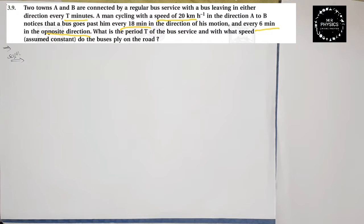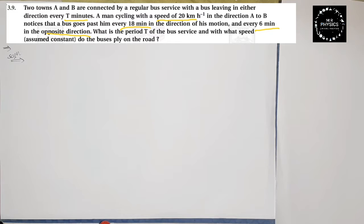Hello students, next example 3.9. Look at the question: two towns A and B are connected by a regular bus service with the bus leaving in either direction every T minutes. A man is cycling with a speed of 20 km per hour in the direction of A to B. We have to define the period T of the bus service and find the speed of the bus, assuming it is constant.